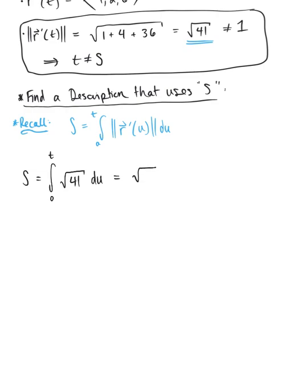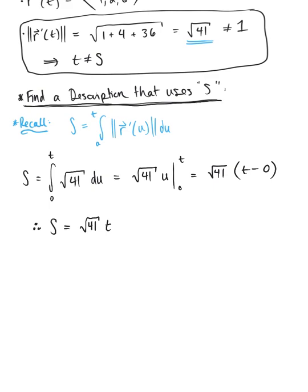Integrating gives us √41 · u evaluated from 0 to t, which leaves us with √41 · t. This gives us the relationship between the arc length parameter and the arbitrary parameter t: s = √41 · t. Since we want a description using arc length, we solve for t, giving us t = s / √41.